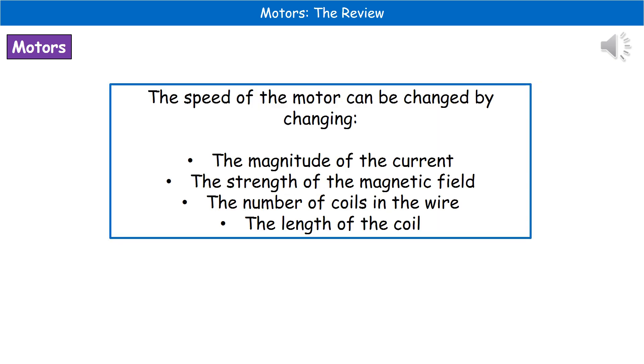If we consider the fact that we will probably want to change the speed of our motor at some point, then there are four things that we could potentially do to achieve this. First one is we can change the magnitude or the size of the current. So the greater your current, the faster it's going to turn. We can change the strength of the magnetic field. And again, the larger the strength of the magnetic field, the faster it will turn. We can increase the number of coils on the wire to make it spin faster. And we can also change the length of the coil. So the longer it is, the faster it spins. So any of those four things can be changed in order to change the speed of our motor.